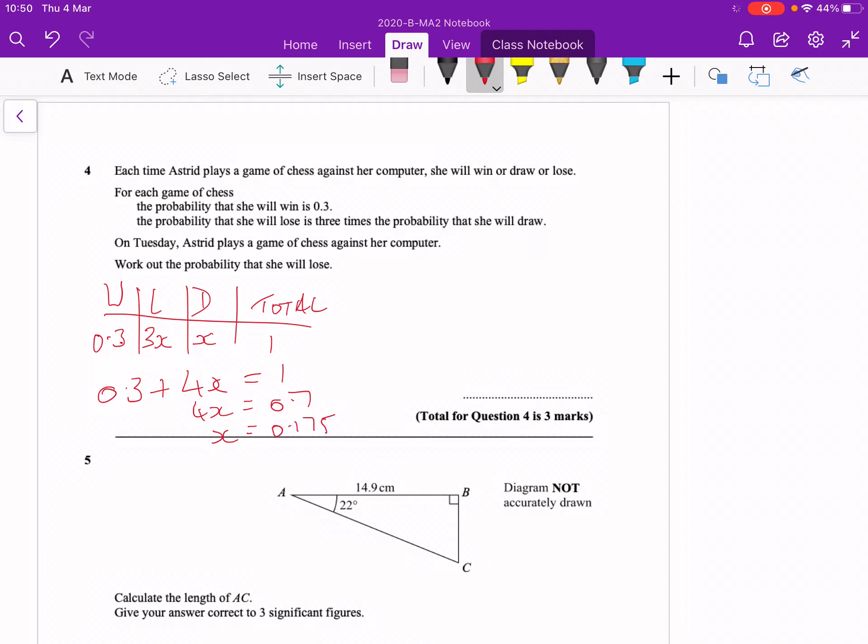Okay, that in itself is the probability of drawing. We want the probability that she loses, so I need to do three lots of that, which is three times 0.175, comes out with an answer of 0.525.